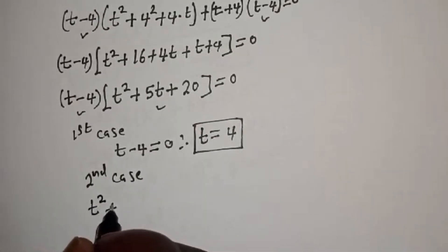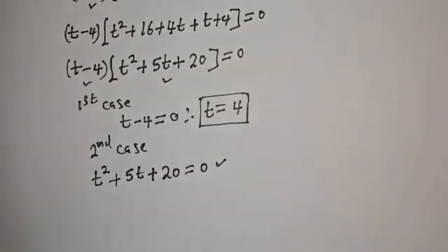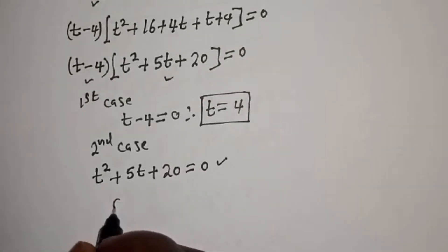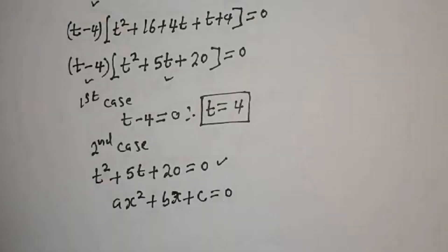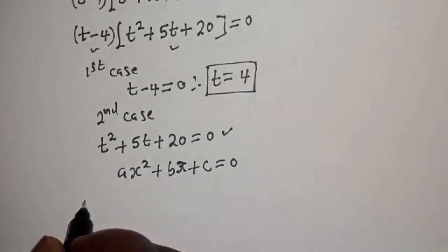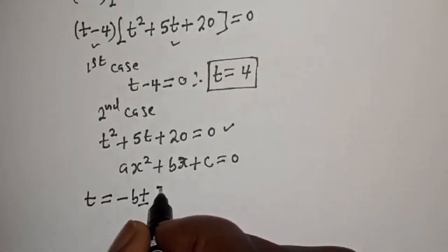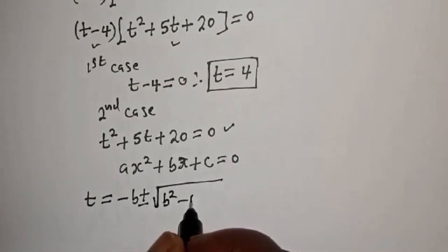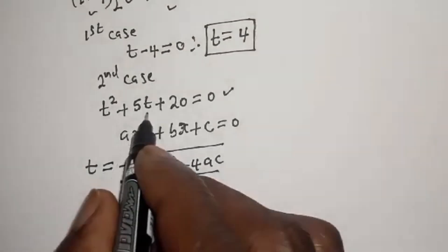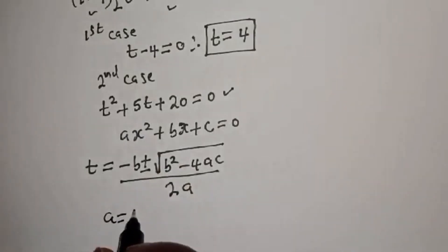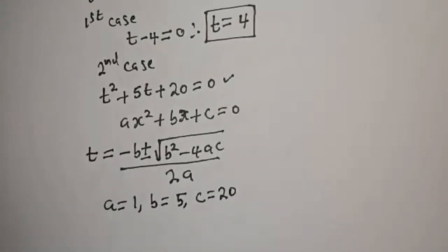The second case: t squared plus 5t plus 20 is equal to zero. This is a quadratic equation of the form a s squared plus b s plus c equals zero. We solve this using the quadratic formula: t equals minus b plus or minus square root of b squared minus 4ac, over 2a. From the equation, a equals 1, b equals 5, and c equals 20.